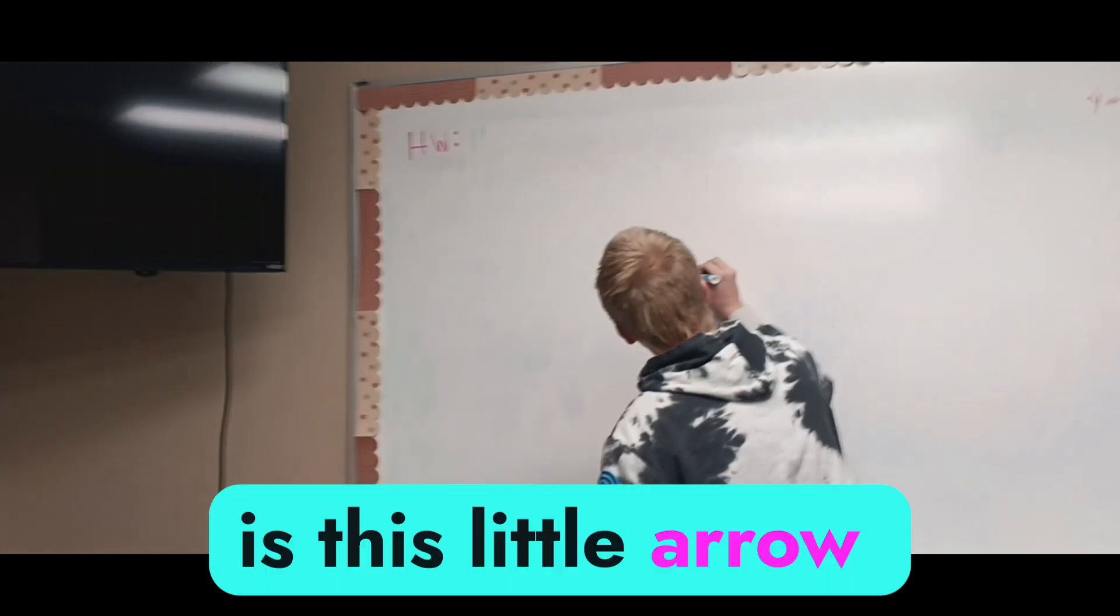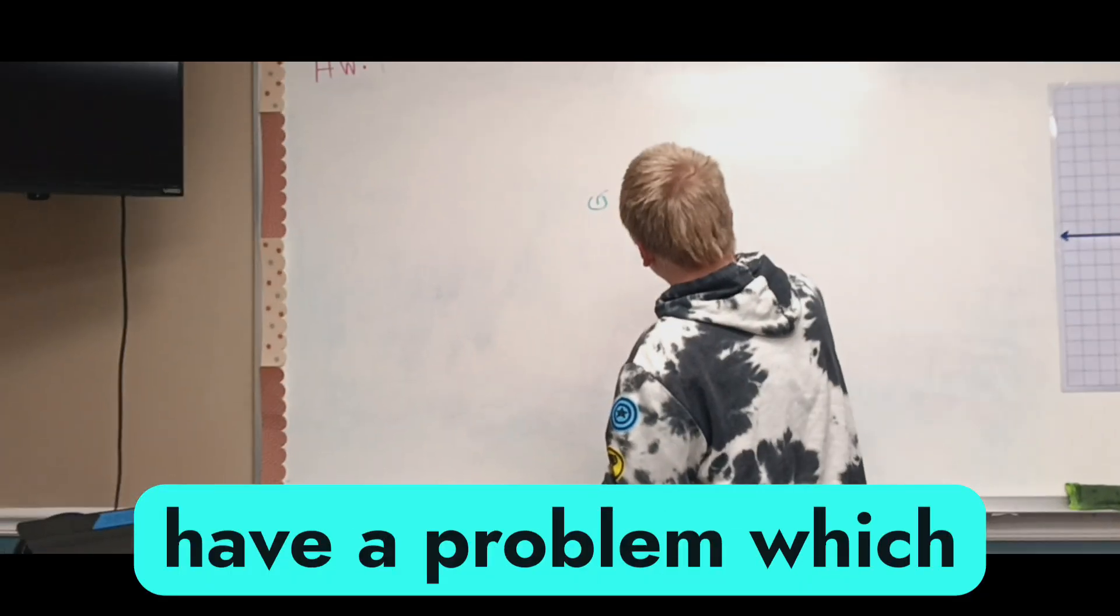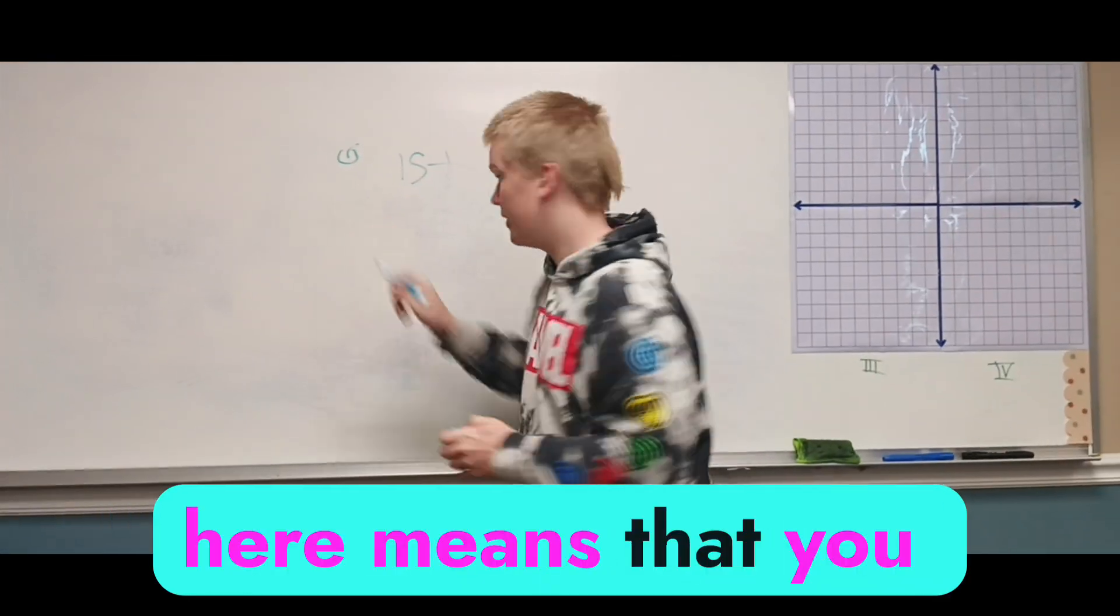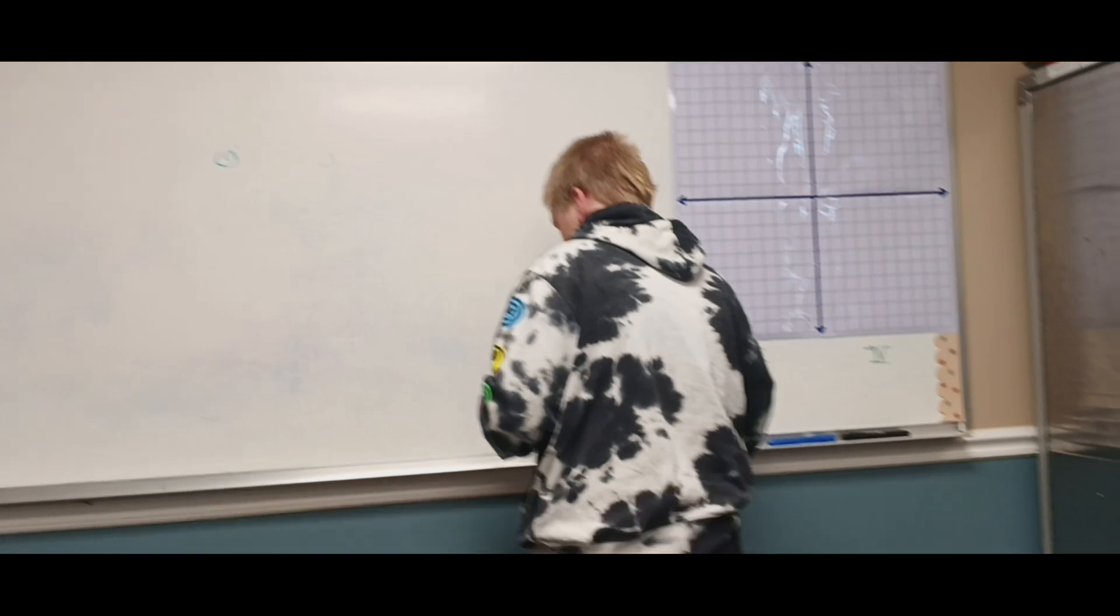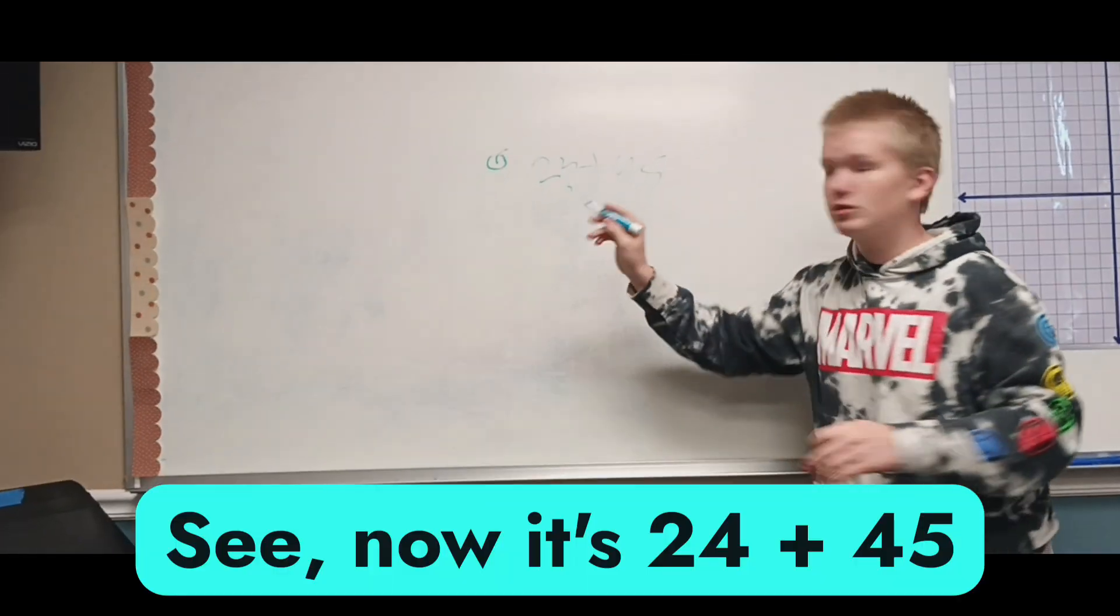So the change symbol is this little arrow thing right here, right? And so say if you have a problem which is like 15 plus 11, right? The change symbol here means that you change both numbers to be whatever in the world you want. See, now it's 24 plus 45.